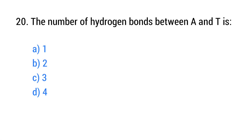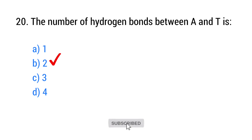Question number 20. The number of hydrogen bonds between A and T is? The right answer is option B: 2.